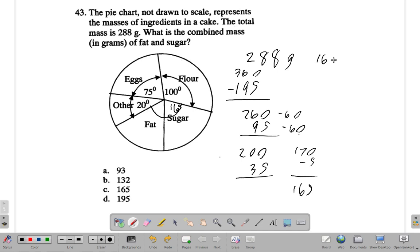Now the fraction of the whole here is 165 over 360, and you multiply that by 288. If you put 5 into this, 5 into 165 goes 33, and 5 into 360 goes 72. So that's 33 over 72.